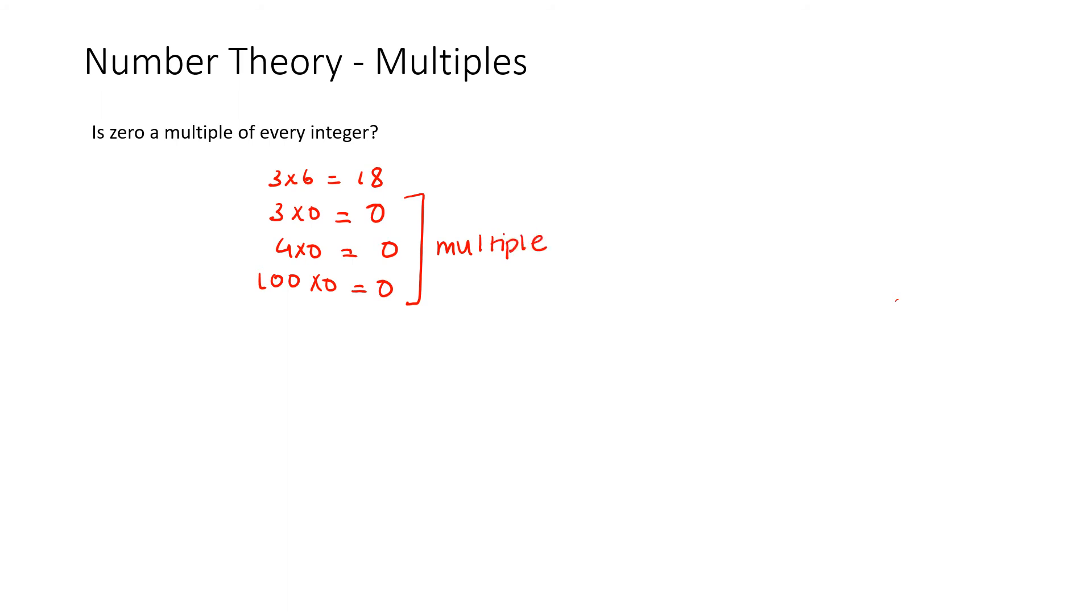And even if I put this in the perspective of variables, for example z times y is equal to x, and let's say z is zero. Zero times y is always going to be zero, which once again proves that zero is a multiple for every integer. Now this question says, are multiples and factors the same?